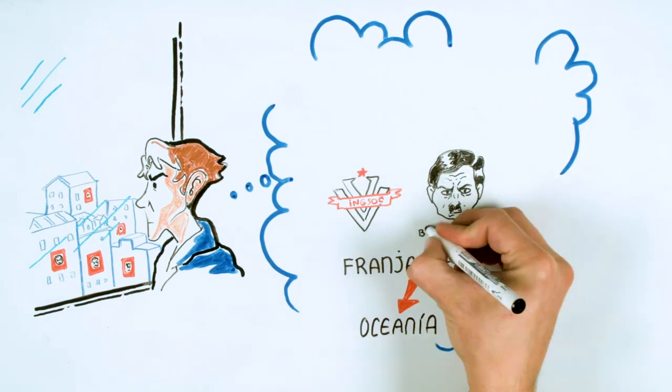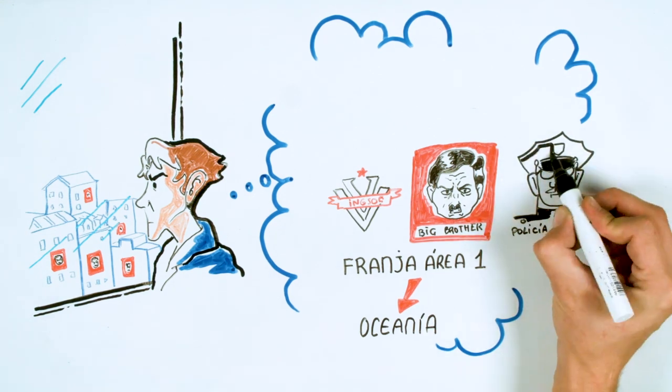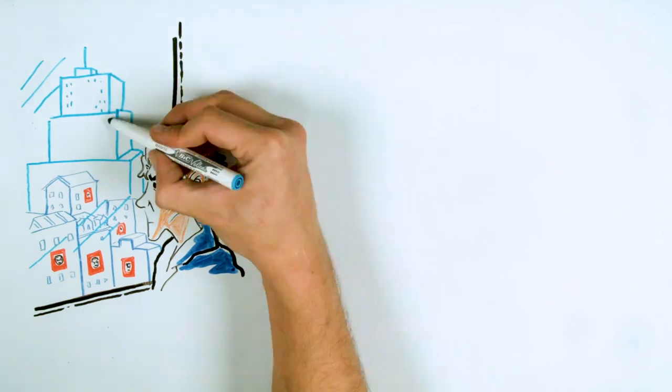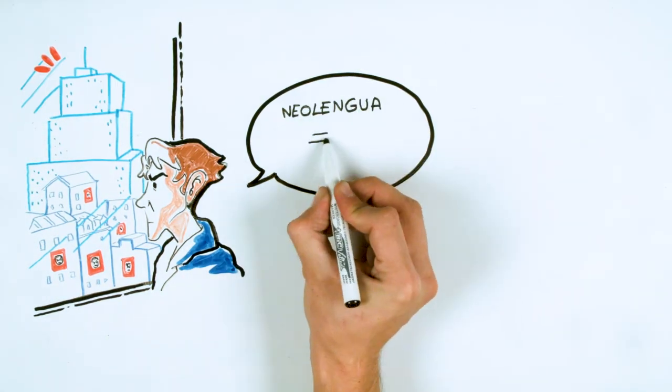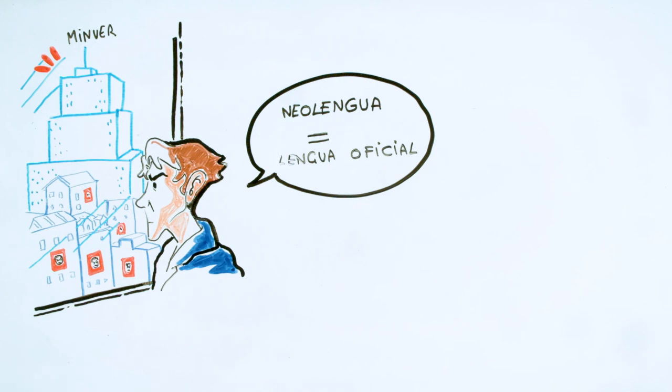Order was kept thanks to the patrols and the thought police, who listened to you and watched you through the telescreens. That way they controlled your thinking. Winston worked in the Ministry of Truth, called Minitru, responsible for culture and education.